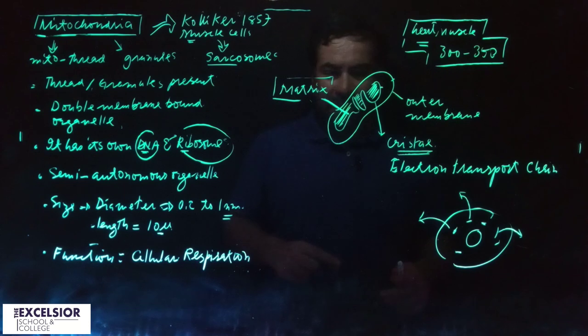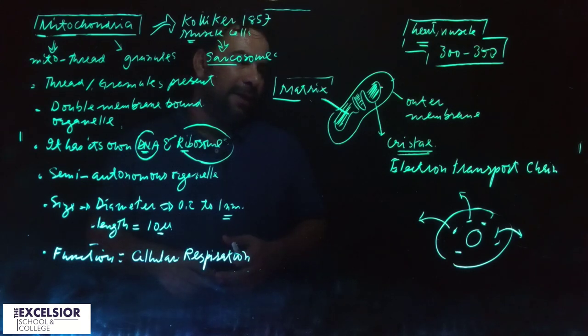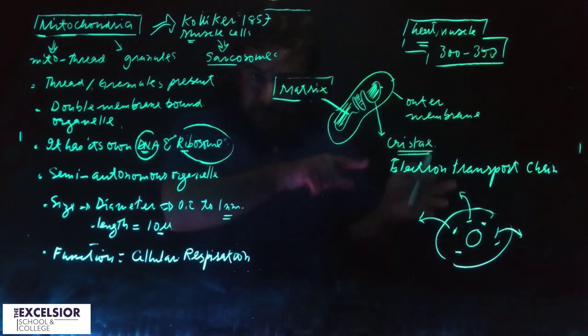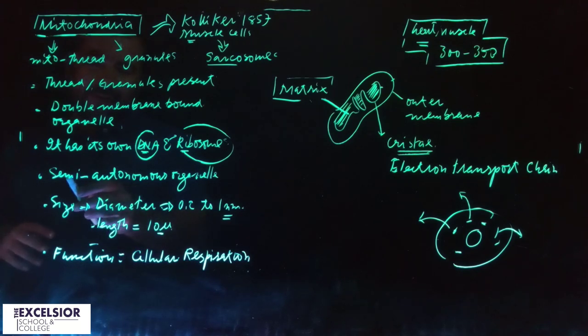They can make their own ATPs. So who is dependent on who? The nucleus is probably dependent on the mitochondria and not mitochondria dependent on the cell. This is the reason why it's called semi-autonomous. Semi is half and autonomous is self-working, so it's halfway self-working.